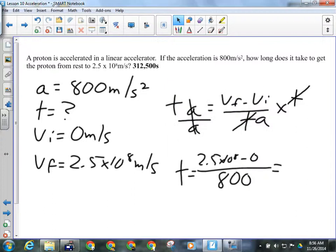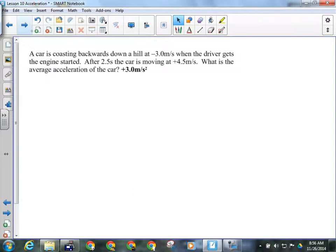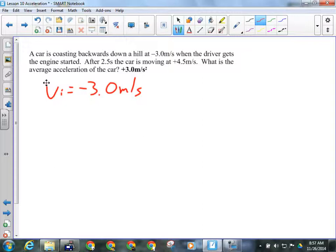And the other one's giving us trouble. Five. All right. So cars coasting backwards. This is a tricky one because we've got two different directions, and that's what makes this one tough. Cars coasting backwards down a hill at negative 3 meters per second. So that's VI. Negative 3.0 meters per second. When the driver gets the engine started, after 2.5 seconds, the car is moving at 4.5 meters per second forwards or up the hill now. So what's the average acceleration of the car? So I'm looking for A. So I don't have to do any manipulating. That's good. That makes it a little easier.